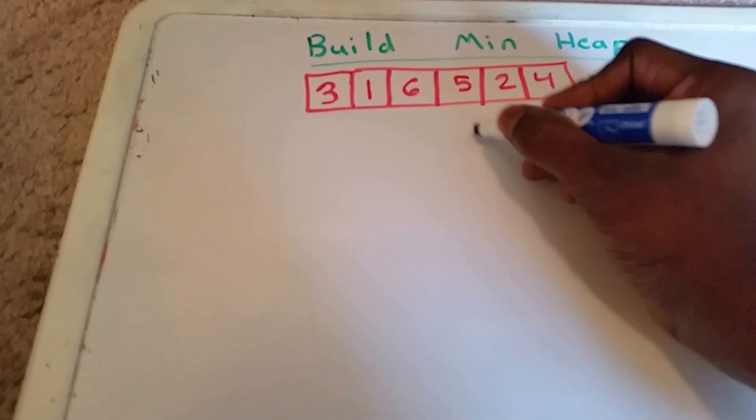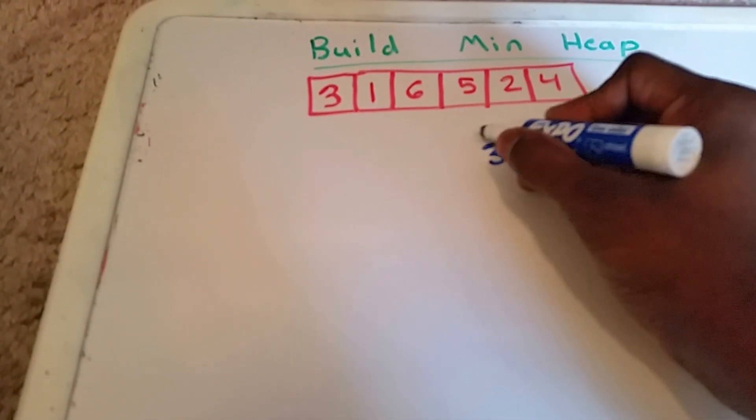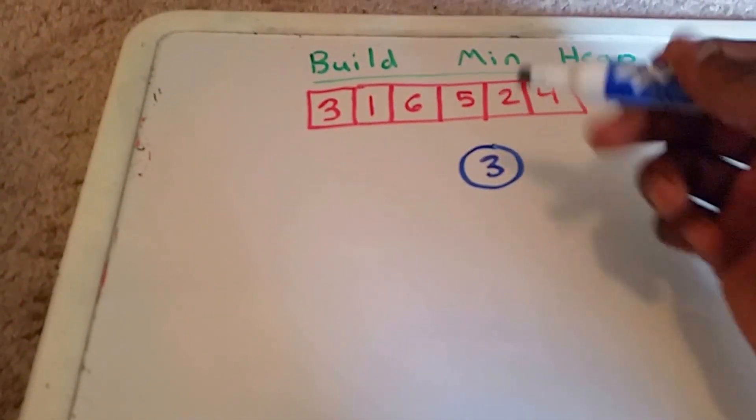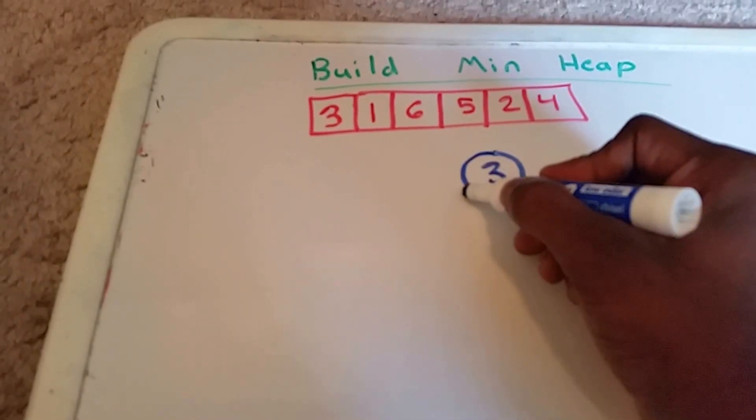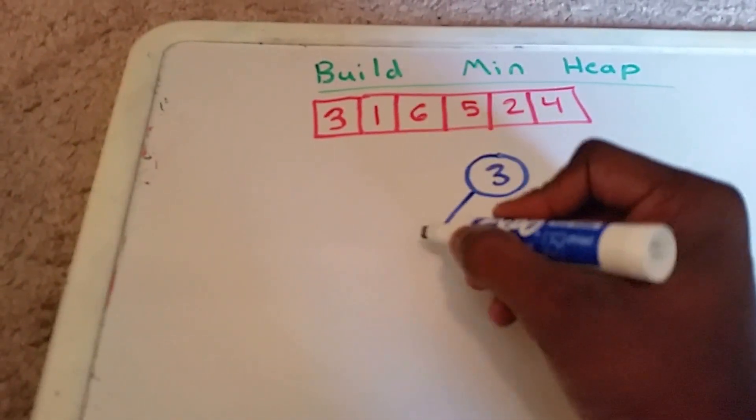First, what we're going to do is add the element 3 to our heap, and we're going to go from top to bottom, left to right. Next up, we go left to add our next element, which is 1.